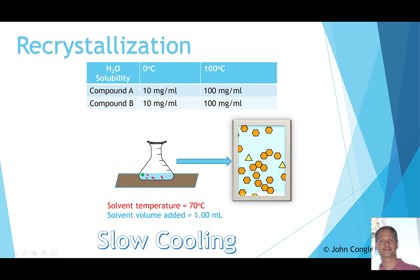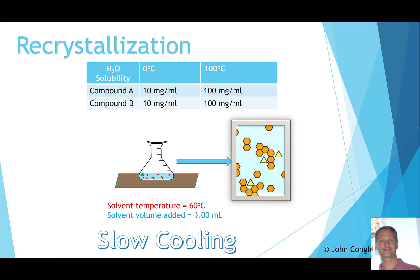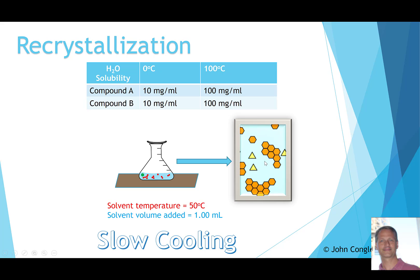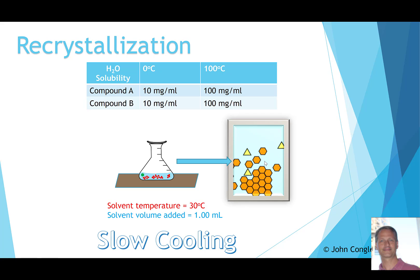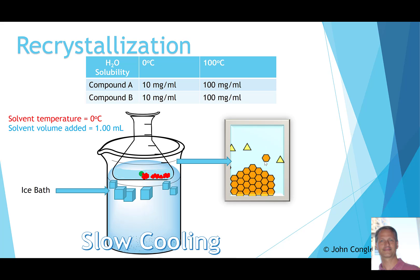At 70 degrees, crystals are growing; at 60 degrees, we have larger crystals, and though a few impurity triangles might get caught, sufficient cooling time allows them to move out. Once near room temperature, we decrease solubility further by placing the flask in an ice bath, taking it down to zero degrees. We can't do this last step gradually, but the slow cooling to room temperature gives time for impurities to be excluded.